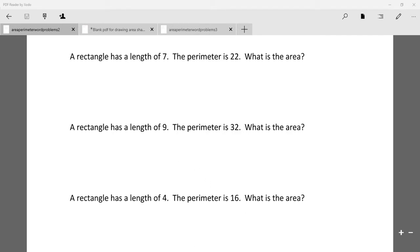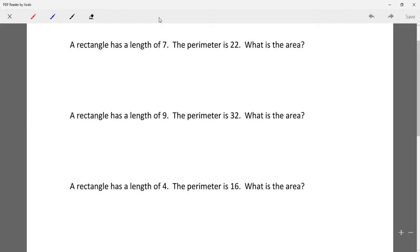All right, now we're going to look at another type of word problems for area and perimeter. In this case, they give us the length and the perimeter, and then you have to figure out what the area is. So these are a little bit trickier.